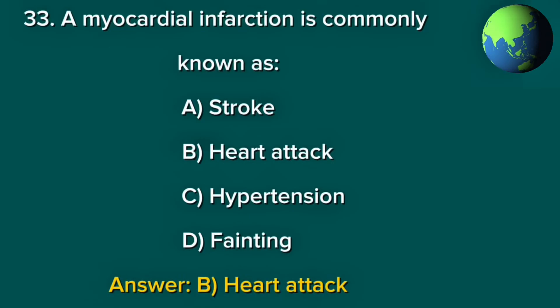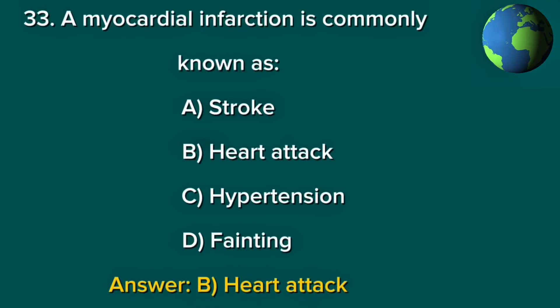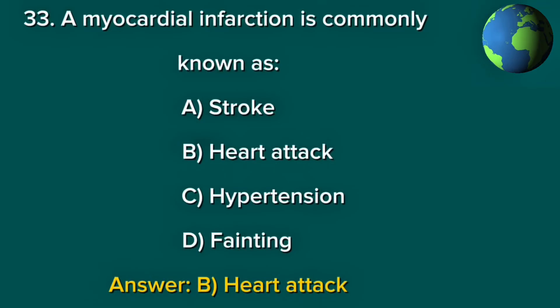Question 33. Myocardial infarction is commonly known as? A. Stroke. B. Heart attack. C. Hypertension. D. Fainting. Answer: B. Heart attack.